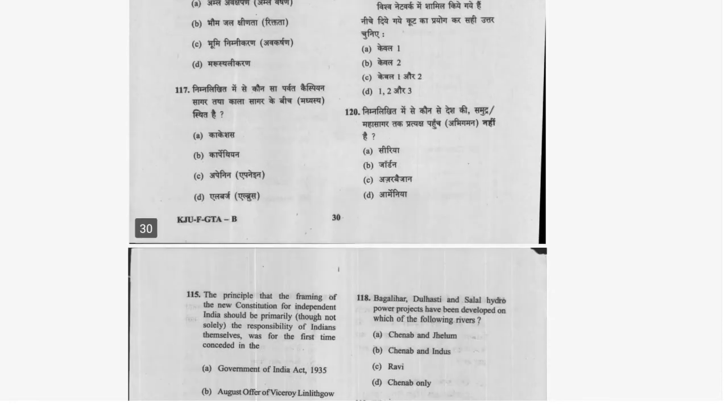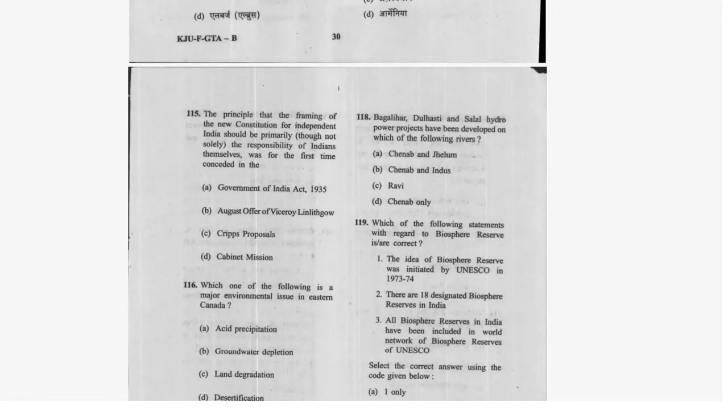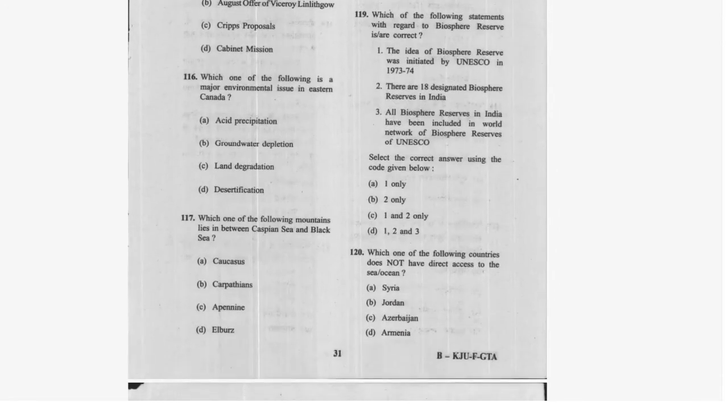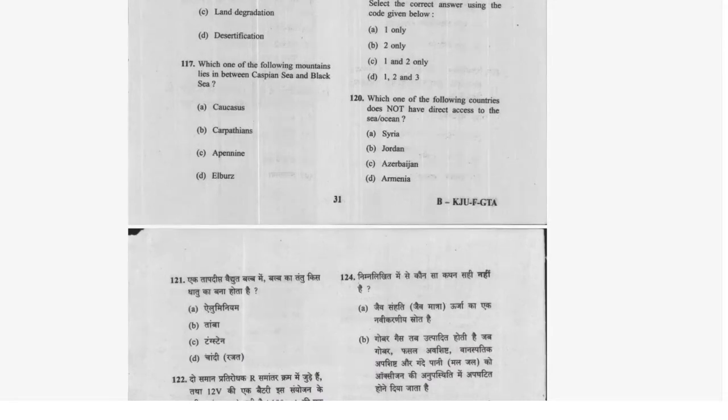Question 106: The principle that framing the new constitution for independent India should primarily be the responsibility of Indians themselves was first considered in the August Offer — option B is correct. Question 107: The major environmental issue in eastern Canada is acid rain — option A is correct.